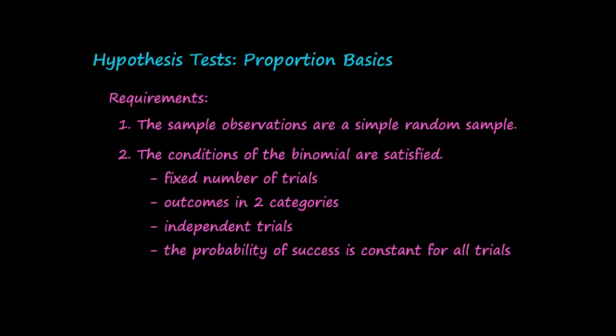In a proportion, you might be taking a survey on the number of left-handed people out of a population. You would select your number of trials, your sample size n. Your outcomes are in two categories - either the person is left-handed or they are not. The trials would be independent. One person's response is not dependent on someone else's response. And the probability of someone being left-handed is constant for that population, not changing as you're conducting your trial. So this is a binomial when we are conducting tests on proportions, as we said before when constructing confidence interval estimates for proportions.